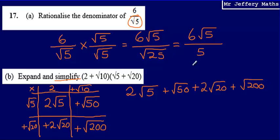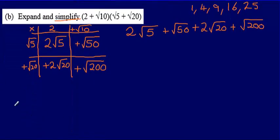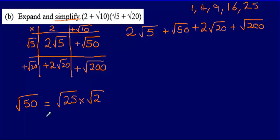Let's write down our square numbers: 1, 4, 9, 16, 25, and so on. With 2 root 5, I can't simplify that, so it stays as it is. But root 50 can be written as the square root of 25 multiplied by the square root of 2, which gives 5 times root 2, or just 5 root 2.